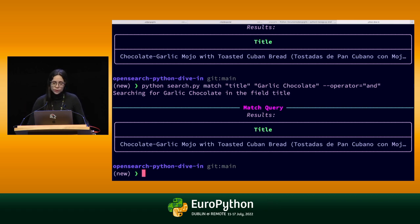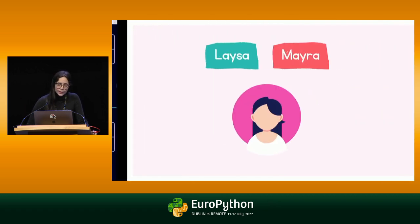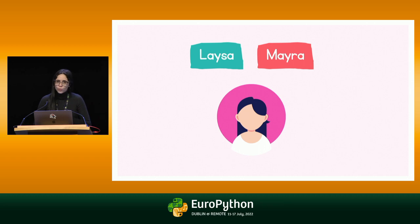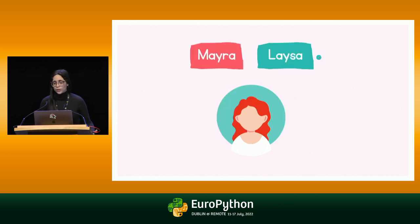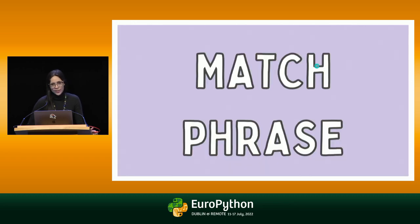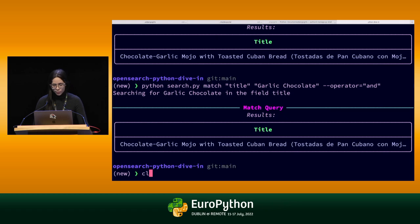But in some cases, for example if you're looking for someone's name in a database and you switch the surname with the first name, you might end up with a different person. So in some cases you do want to consider the order of your query terms. For that, you would use match phrase, which I'll demonstrate with an example.